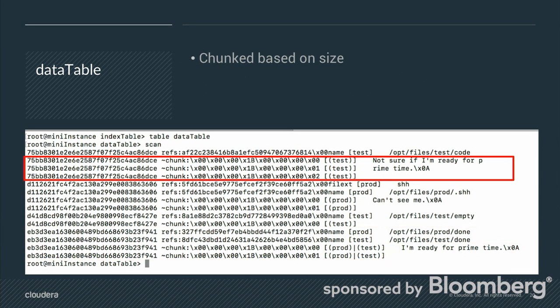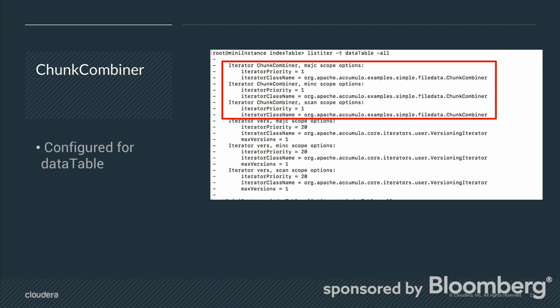There was one file that actually did get chunked, and you can see all the same chunk record characteristics apply — it gets sliced off at the 'p' for 'prime time'. The last four bytes of the 8-byte chunk column qualifier show the zeroth, first, and second chunk instances. The chunking combiner is set when the ingest class creates the data table — if you're running this yourself, make sure that's in the class path for your mini Accumulo instance, otherwise scans on the data table won't work.